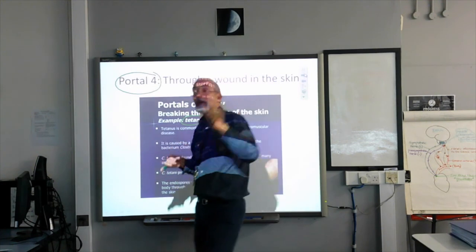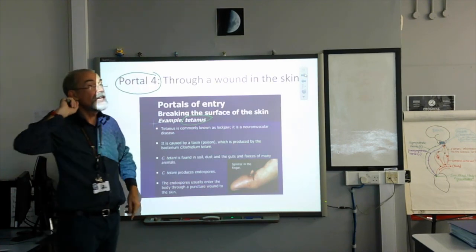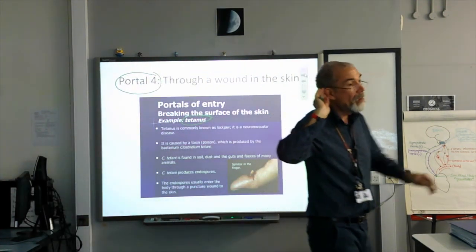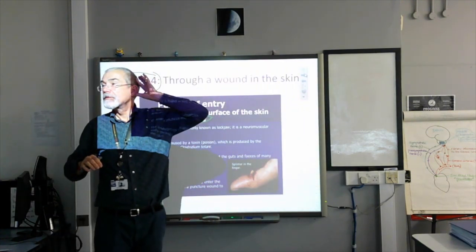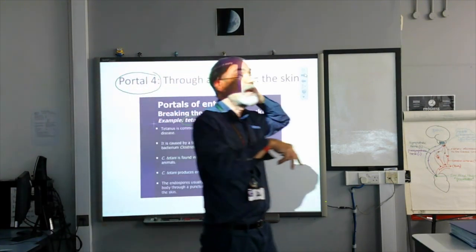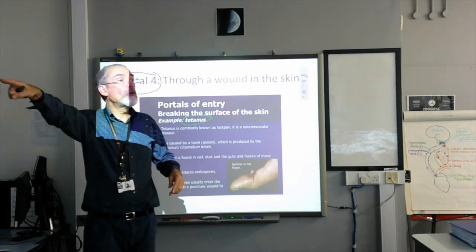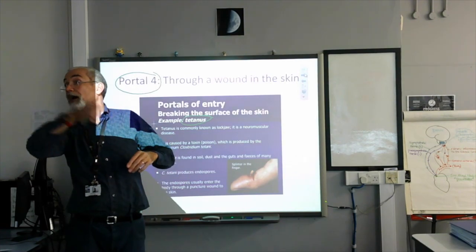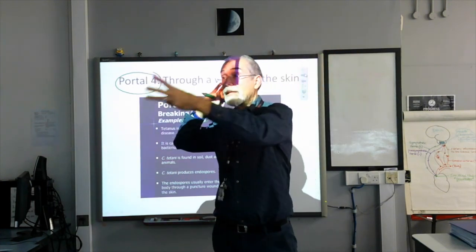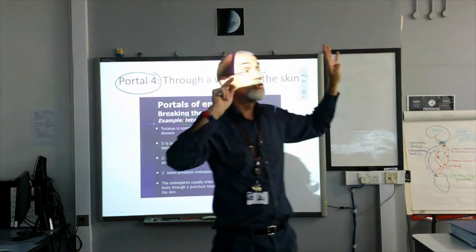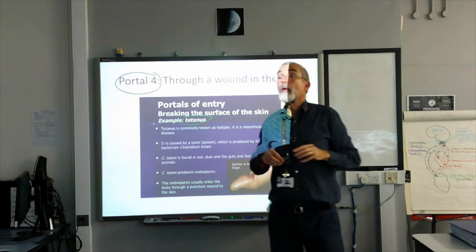Just to recap — does everybody know what a pathogen is? A pathogen is a microorganism that is potentially dangerous. Can anybody name one of the four common types? Fungi, virus, bacteria, protozoa — a small microorganism. How many portals of entry are there into our body? Four. Breaks in the skin, the respiratory system, the gastrointestinal tract, and the urogenital tract.